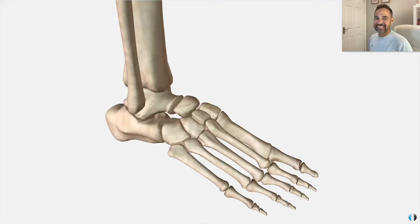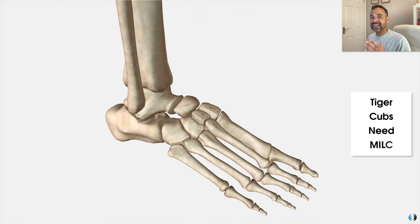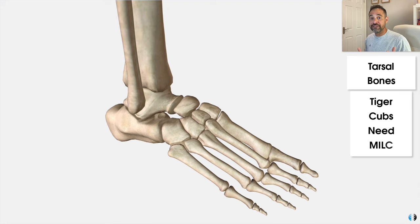There's only one place to start and that is our 3D anatomy model. The first mnemonic for us to share with you is Tiger Cubs Need Milk — but remember, there's a C instead of the K at the end. This one is to help you remember the key tarsal bones, and there are seven of these located in the posterior region of the foot.